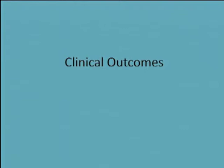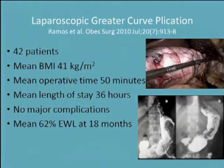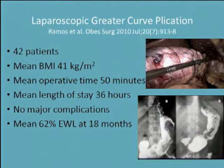This is an updated literature search from the last couple of weeks — really the whole body of literature on plication. There are mostly single-center studies with reasonable numbers and fairly short-term follow-up. One of the earlier studies by Dr. Salas in Chile was 100 patients with a mean BMI of 37.5 and one-year results showing 69% excess weight loss with no major complications or mortalities. Ramos and his group in Brazil published their initial experience of 42 patients with a mean BMI of 41 — short length of stay, no major complications, and at 18 months 62% excess weight loss.